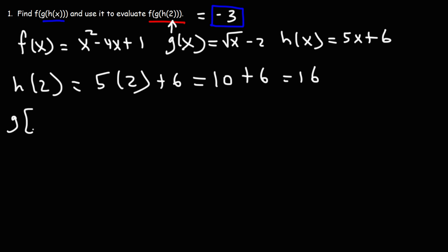Now, g of h of 2. h of 2 is 16. So this is g of 16. We can plug that into g. So that's going to be the square root of 16 minus 2. The square root of 16 is 4. 4 minus 2 is 2.